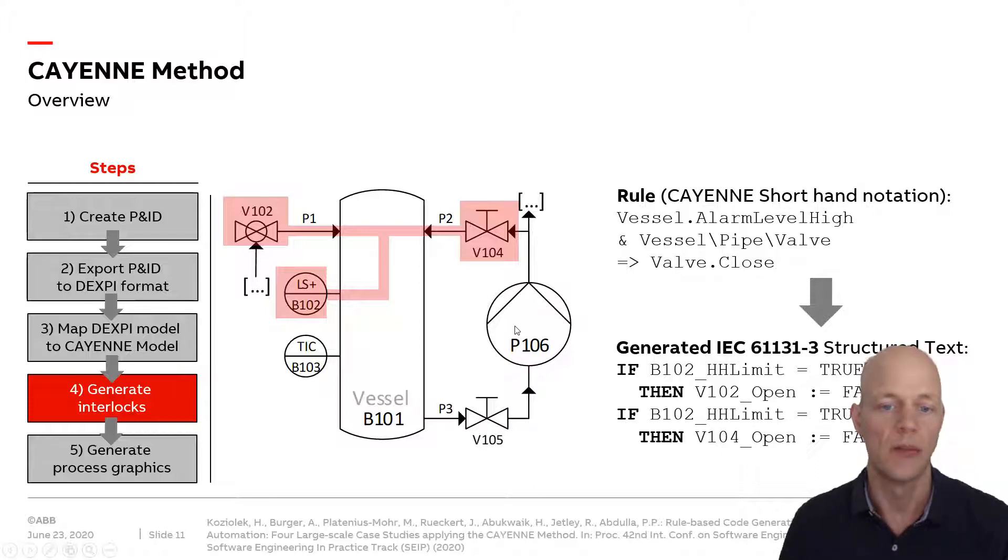The first thing we do is generate interlocking logic. Interlocks represent a linked part of the automation equipment. For example, a level sensor is linked to a valve. Here we have a rule engine populated with rules. One rule says if a level indicator of a tank indicates a high alarm, so the level becomes too high and we get an overfilled tank, then please close all the inlet valves to prevent the tank from bursting.